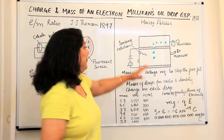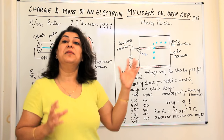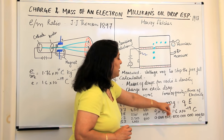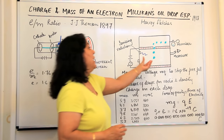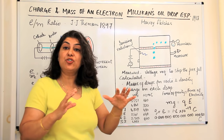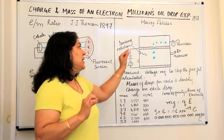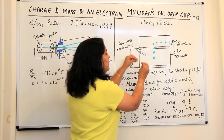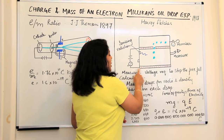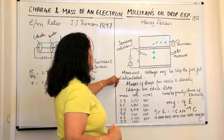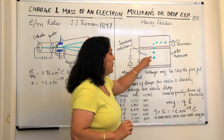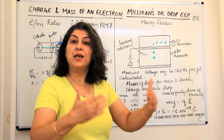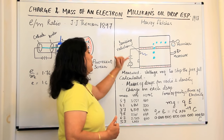When the drop was stationary, the force of gravity equaled the electric force. The force of gravity is mass times acceleration due to gravity. He calculated the mass of each drop from their radii and density. He carried out this experiment multiple times with many drops — the droplets were not the same size and had not gained the same number of electrons. When he made each drop stationary, he calculated the voltage required to stop the free fall, and from this he was able to find out the charge on each drop.